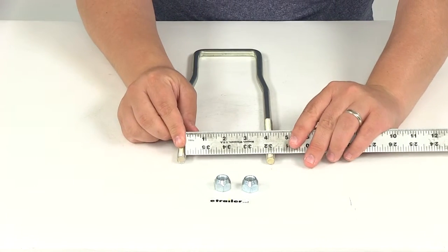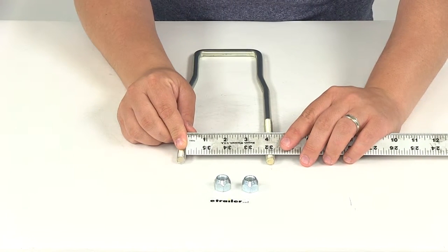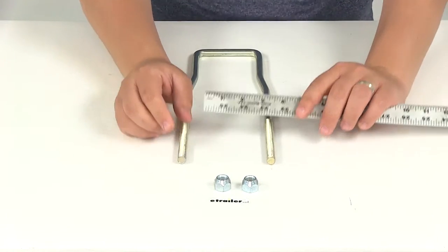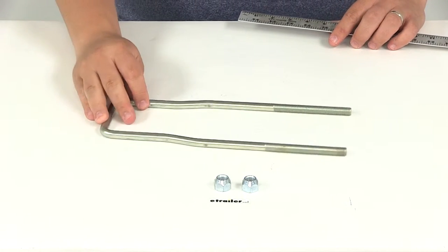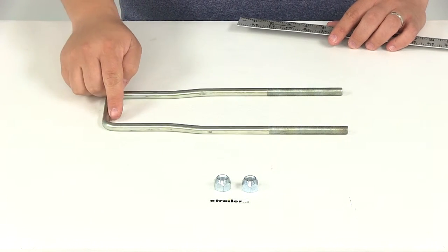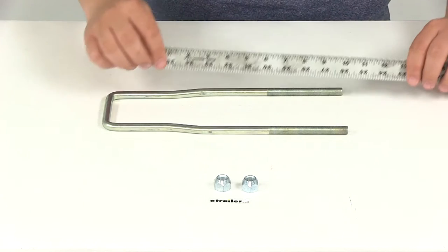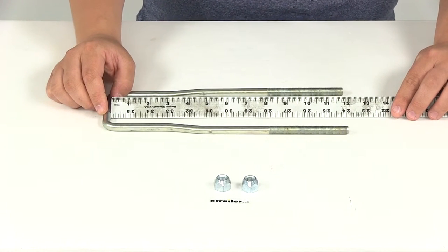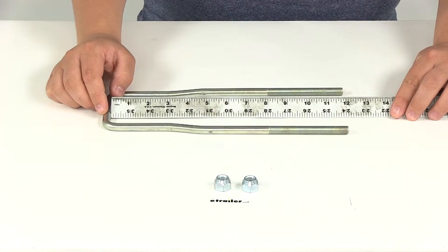Measuring inside edge to inside edge down at this location, that's going to be 3 3/4 of an inch. The length that this offers, measuring from the bottom of the bar to the end of the threaded portion, is right around 12 inches.